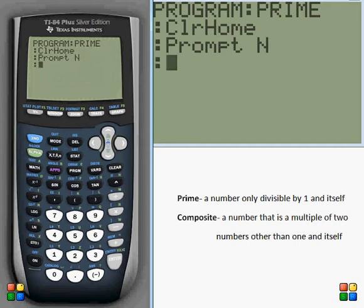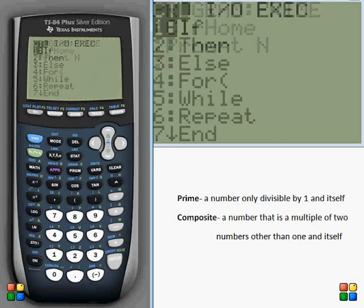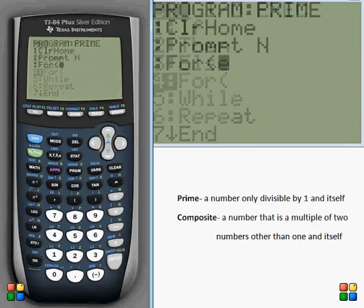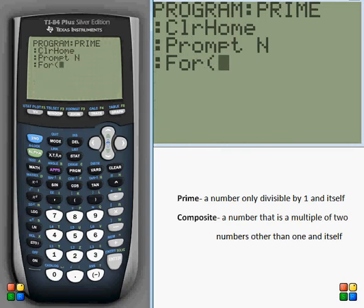And then we have to start our loop to loop through every number in between two and that number to see if there are any factors in there. So go ahead and open a for loop. The first argument of the for loop is a variable in which the current position of the for loop will be stored. So we can just go ahead and use A.